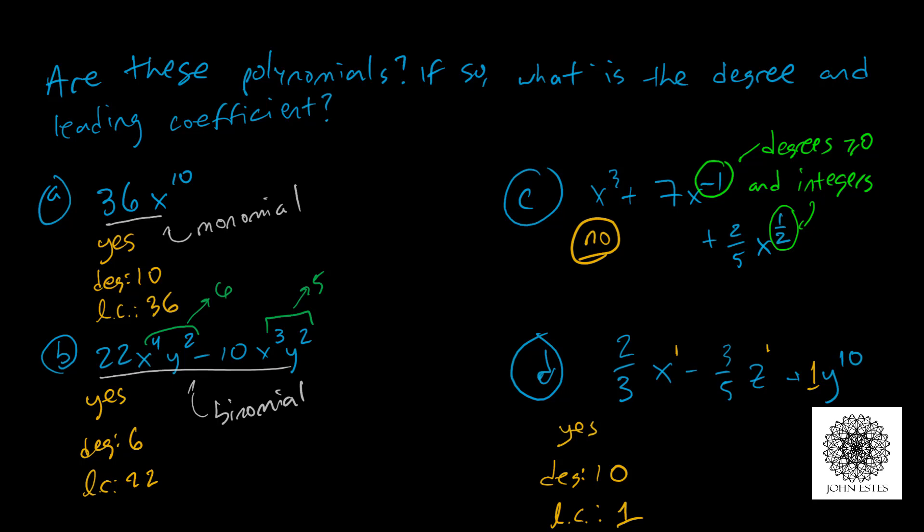Now this also has a special name. You'll deal a lot with this type thing in algebra. We have a three-term polynomial. This is called a trinomial. So hopefully this makes some sense, but now we really want to know, what is a polynomial?